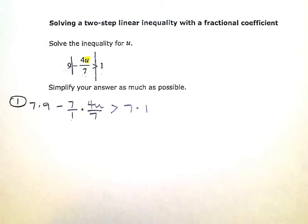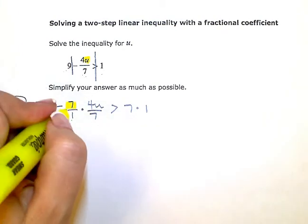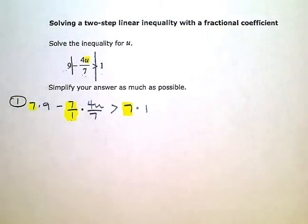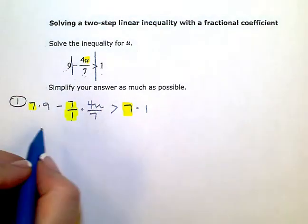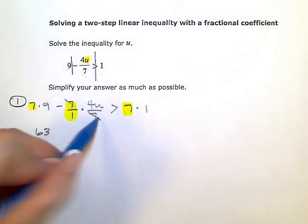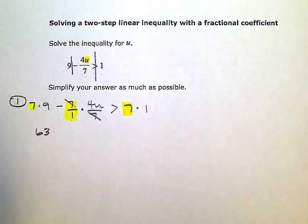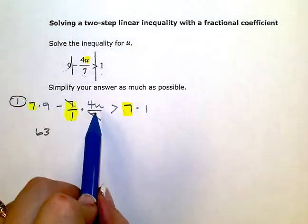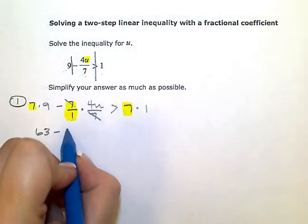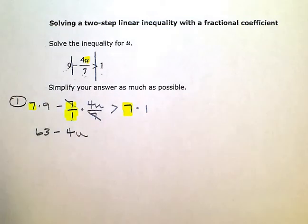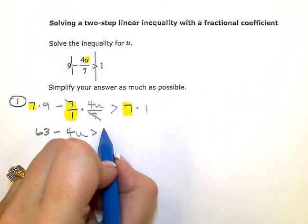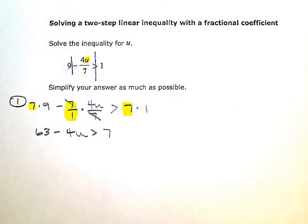I multiplied every single term by seven on either side of my inequality. Seven times nine is sixty-three. Over here, my sevens will cancel — which was the whole point of doing this — and I'm left with just four u. So I have sixty-three minus four u is greater than seven times one, which is seven. Now my fraction is gone and I can proceed with solving.